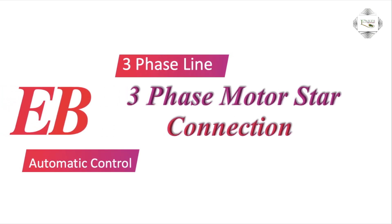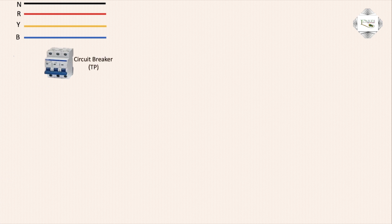Hello viewers, today I discuss the three-phase line three-phase motor star connection automatic control. The system uses a red, yellow, and blue neutral four-wire system with a TP triple circuit breaker for three-phase input and output.